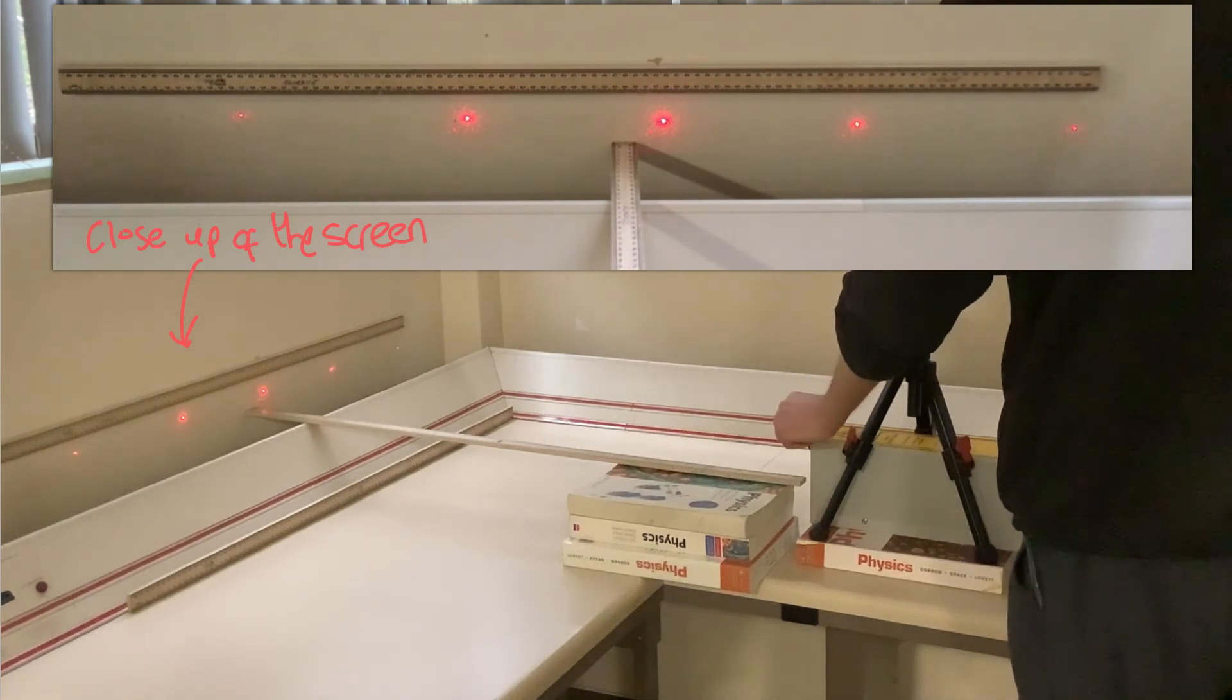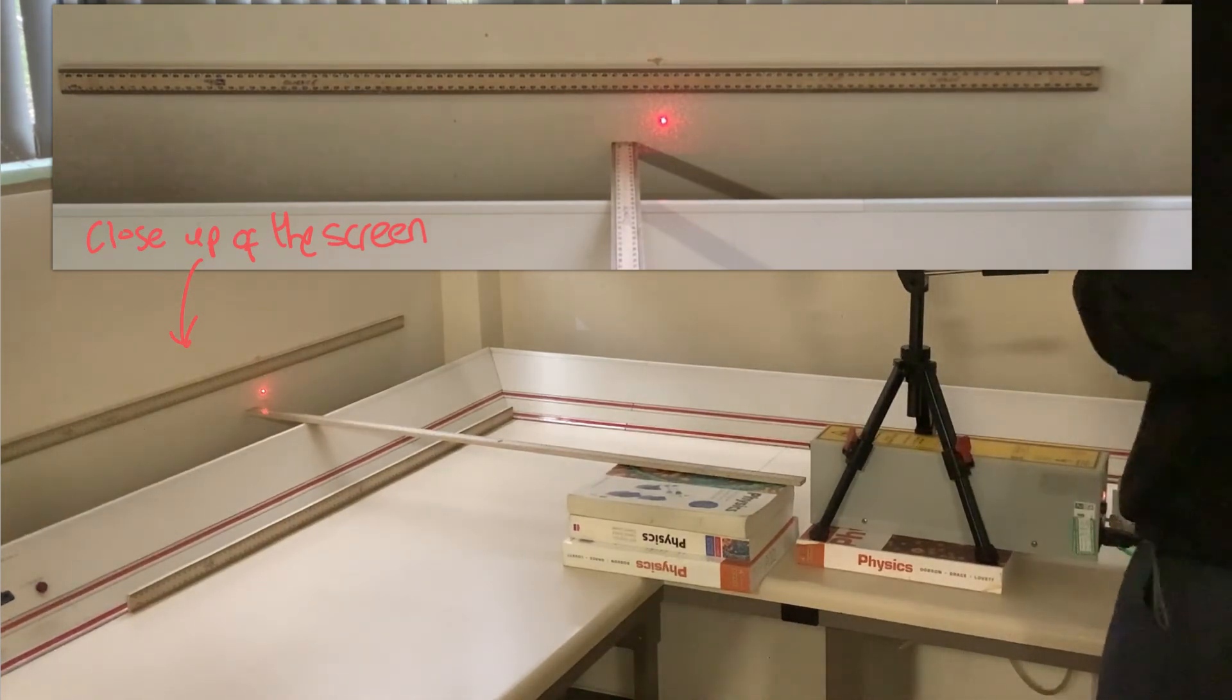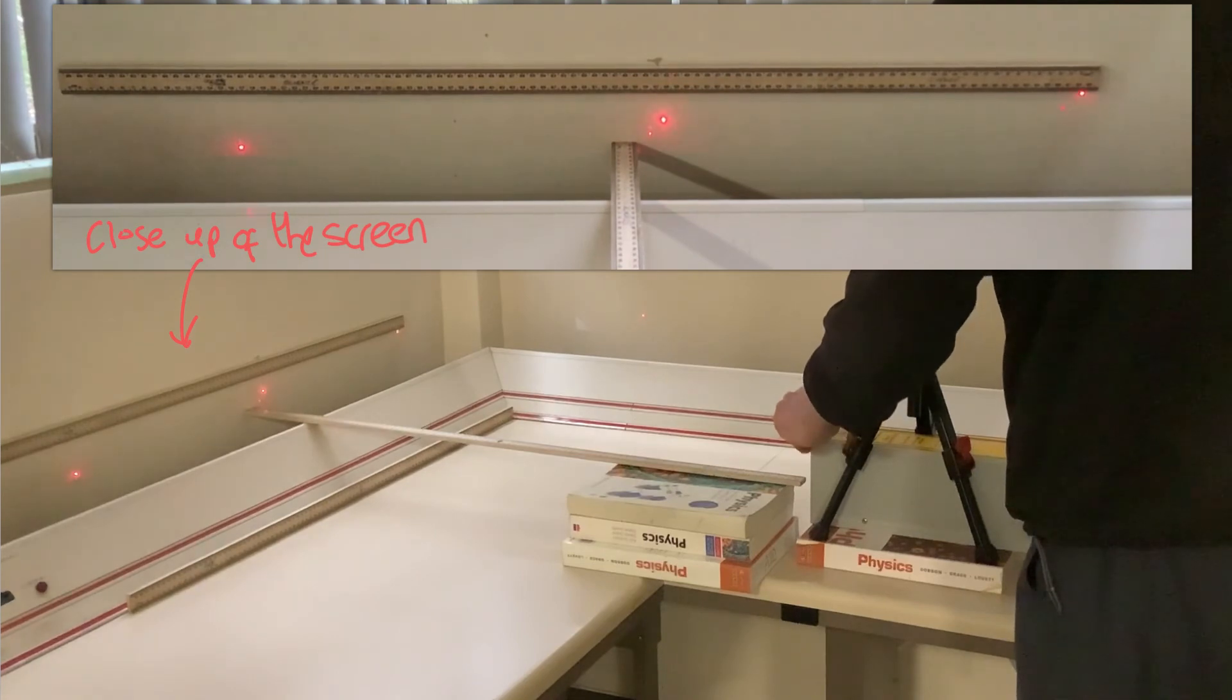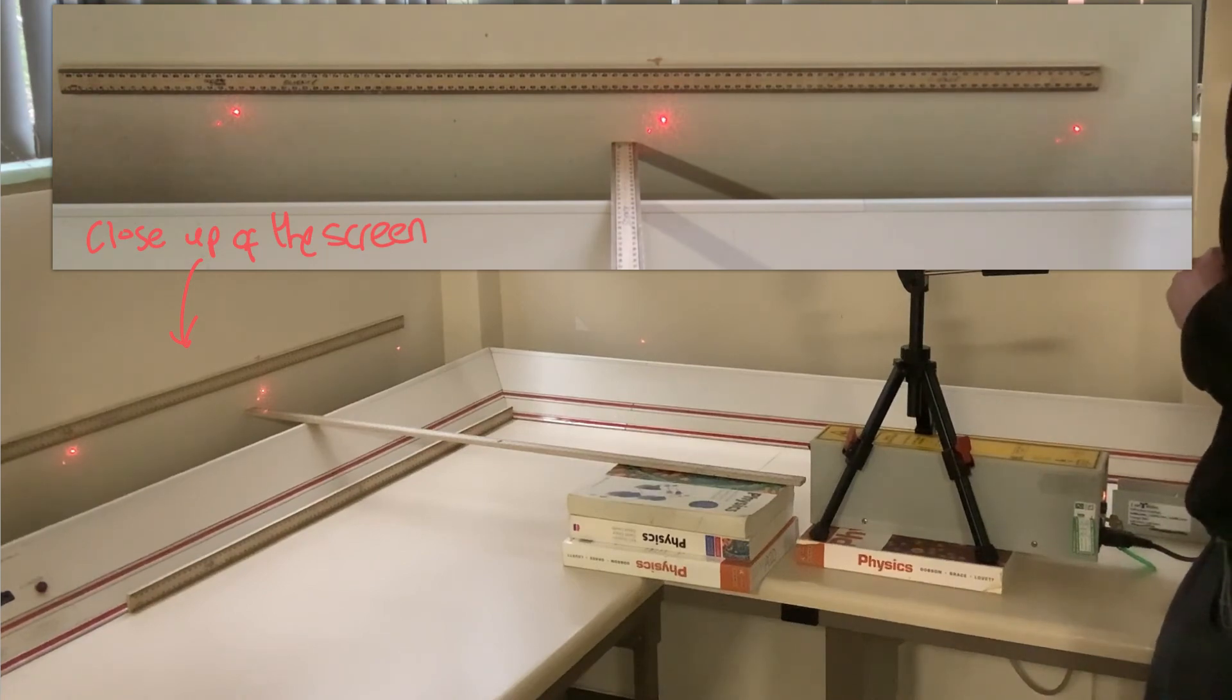And finally, let's change to our diffraction grating, which is 600 lines per millimeter. And there is our diffraction grating, which is 600 lines per millimeter.